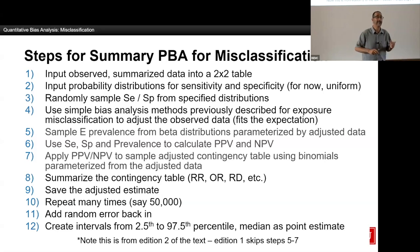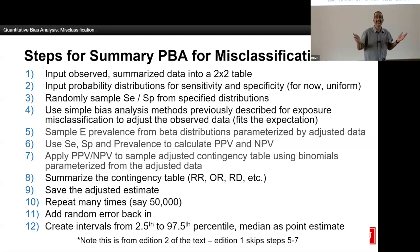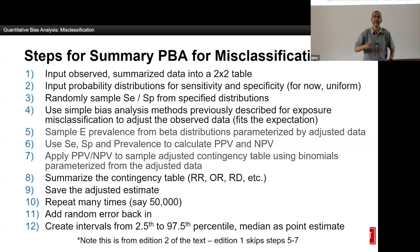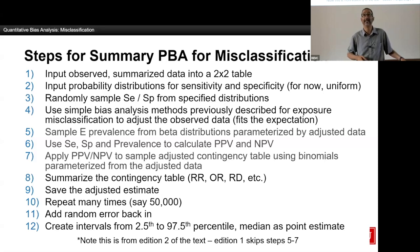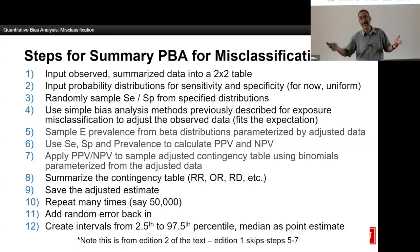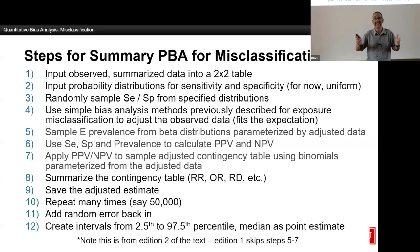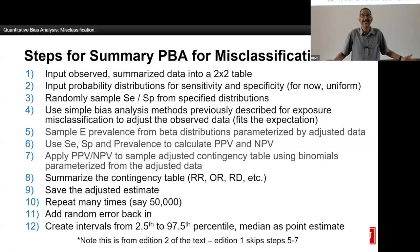I'll have four predictive values: a positive predictive value for the cases, a positive predictive value for the controls, a negative predictive value for the cases, and a negative predictive value for the controls. Now I just flip a coin with a probability equal to the appropriate positive predictive value — if it comes up heads, you're correctly classified; if tails, I reclassify you. Or I can use the binomial distribution and say: for everybody classified as an exposed case, flip a coin with a probability equal to the positive predictive value amongst the cases. That tells me how many are correctly classified and how many are reclassified. Now I have one bias-adjusted estimate, which I can summarize as a risk ratio, relative risk, or odds ratio.